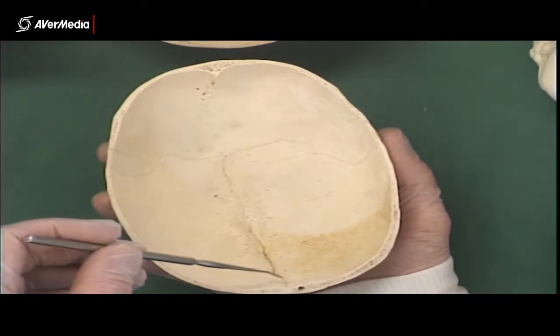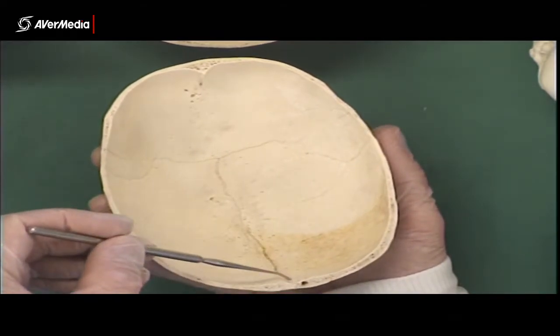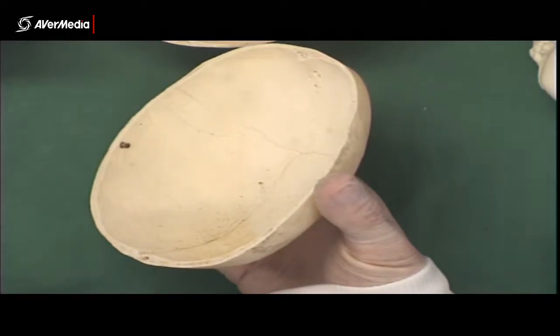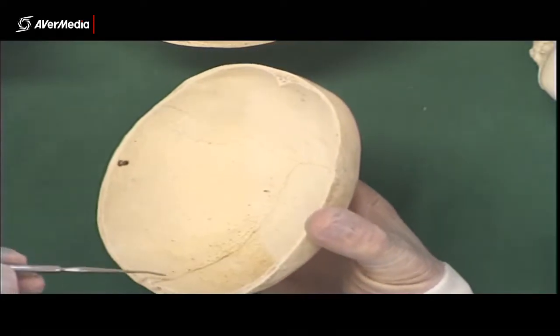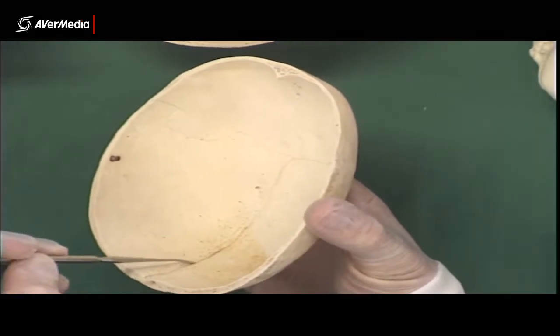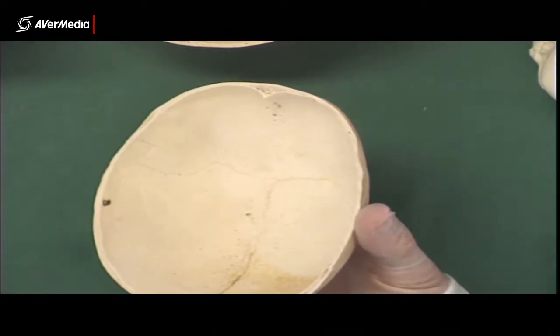And running from that depression, pretty much where the suture goes, the sagittal suture, there should be a groove in there. Now that's the groove for the superior sagittal sinus. So again another vein inside the skull running right along there, groove for the superior sagittal sinus.